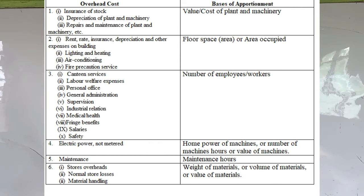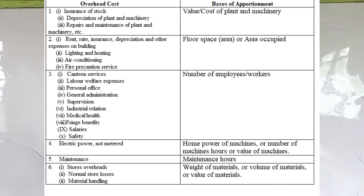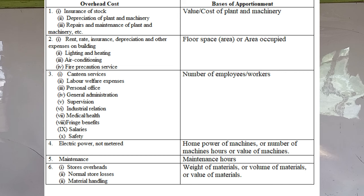Look at the table projected on the screen — one column for overhead costs, the next for basis of apportionment. For insurance of stock, the most appropriate basis is the value or cost of plant and machinery. For depreciation on plant and machinery, the basis is cost of plant and machinery. For repairs and maintenance of plant and machinery, the basis is also cost of plant or machinery.